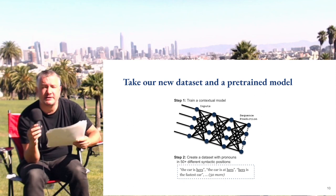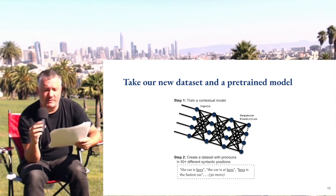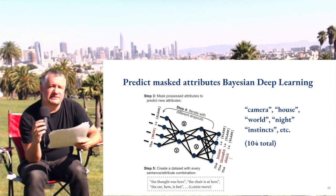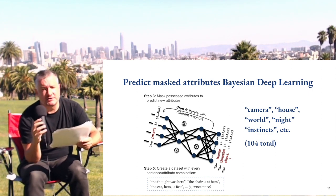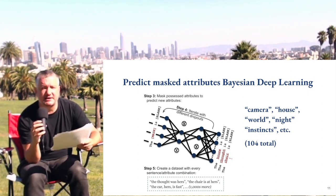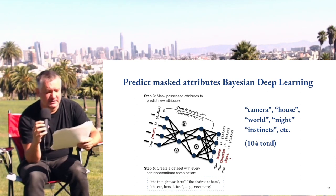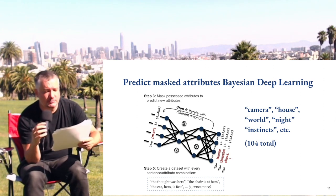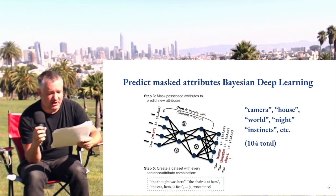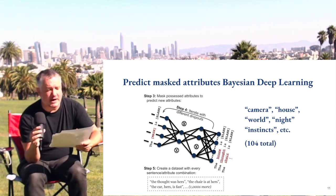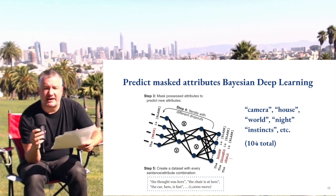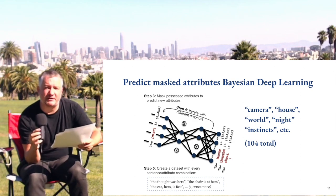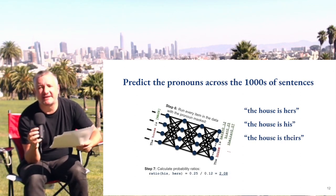We implement Bayesian deep learning — this is dropout at inference time — repeating the inference. Because of dropout at inference time, the model generates different attributes. This generated 104 different attributes in total: some were concrete attributes like 'camera' and 'world,' and some were abstract like 'night' and 'instinct.' We then created thousands of combinations of these different attributes and the initial sentences with pronouns in different syntactic positions.